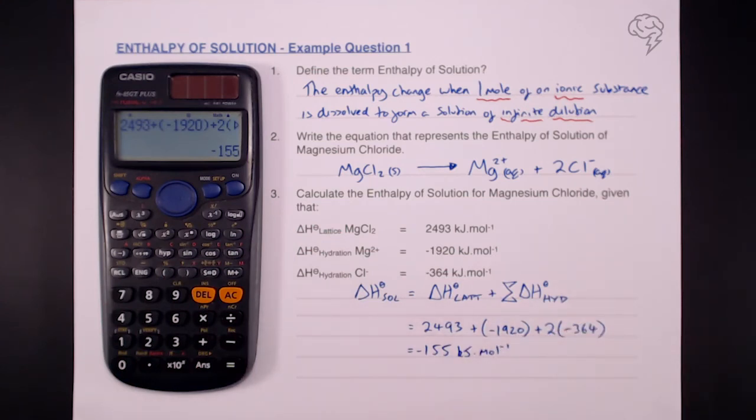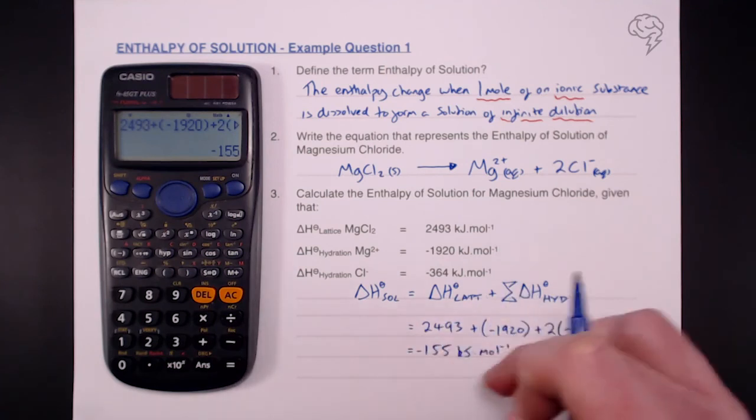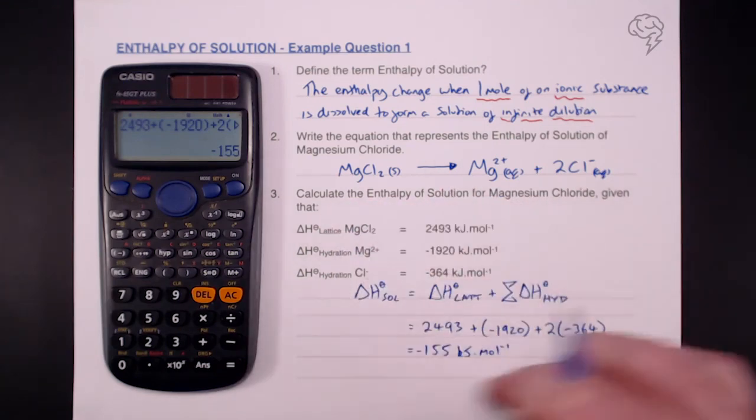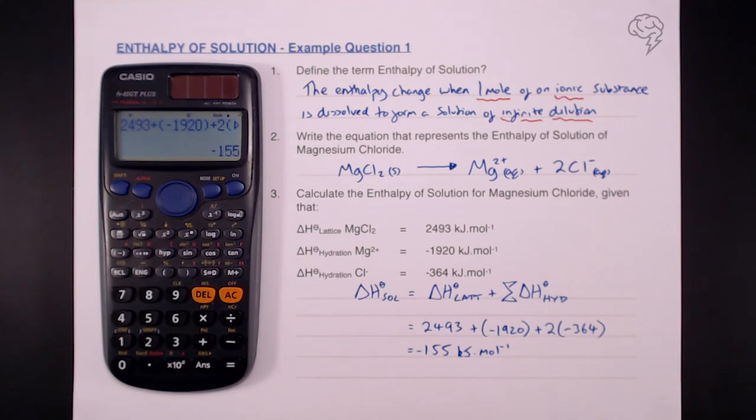So that's a negative delta H solution that we've got there. Now, even if this answer comes up positive, which it isn't in this case, but if it did come out positive, please make sure you put the sign in there because the examiner won't assume that you mean a positive value. So with your answer, always put a sign in front. That's a nice straightforward enthalpy of solution calculation.